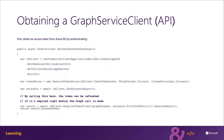Next, the code obtains a reference to the current user and intends to retrieve a previously obtained access token from the token store using the method acquireTokenSilent. If the acquireTokenSilent method fails, the user should be presented with an interactive login. Now that the application has the access token, we can move on to the next step and create an instance of the Graph service client.